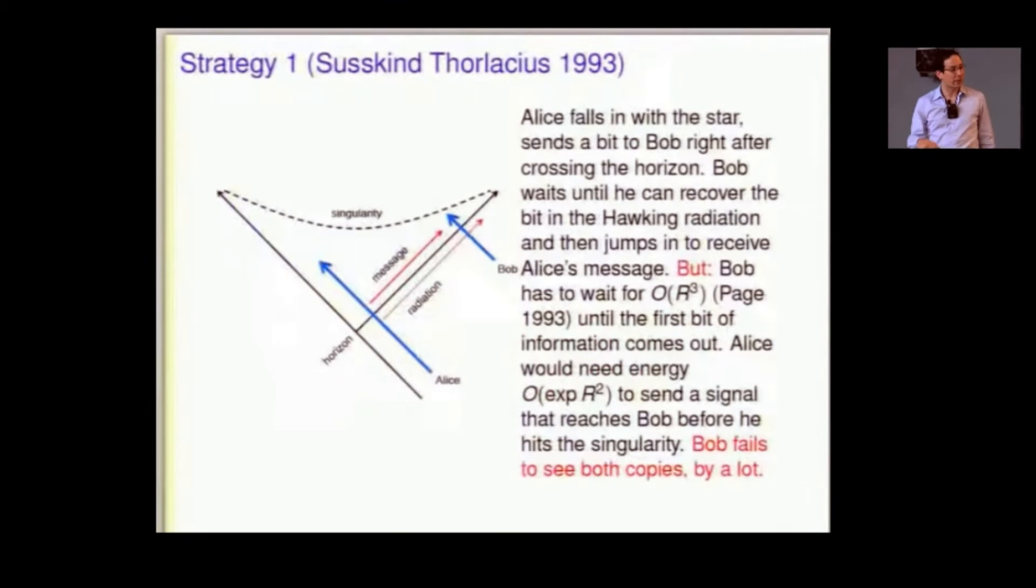Now, if Bob stays outside forever, he'll never be able to see that bit. But, what Bob wants to do, he wants to stay outside long enough to see the Hawking radiation copy of that bit, and then quickly jump in and receive Alice's second copy and verify that this horrible thing, quantum Xeroxing, has taken place.